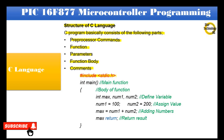#include <stdio.h> — int main() — the main function. From the opening bracket to the closing bracket is the body of the function. int max, number1, number2; — define variable (comment). number1 = 100; number2 = 200; — assign values. max = number1 + number2; — adding numbers. return max — it will return the result value.